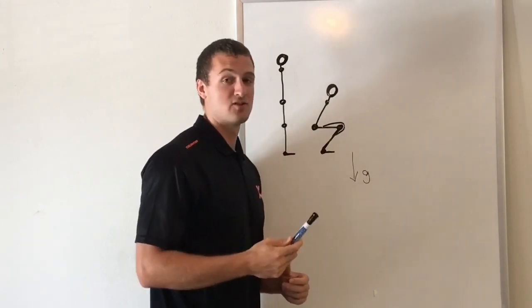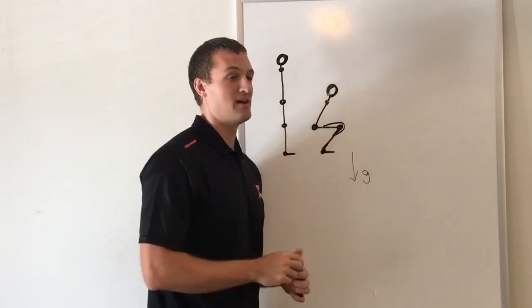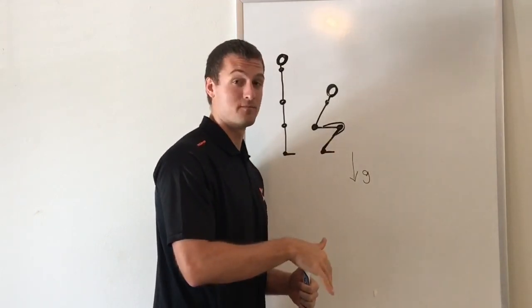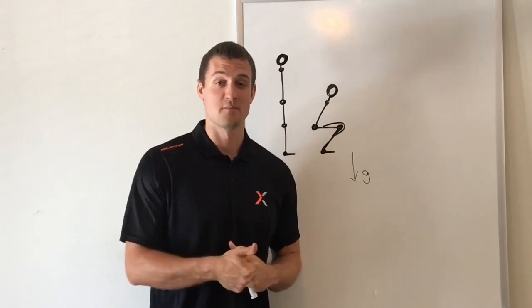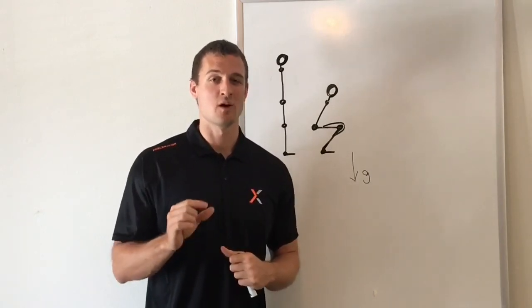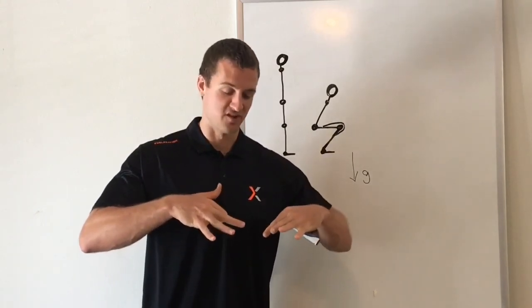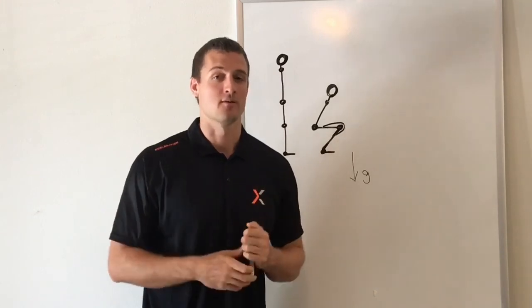And that's actually a contributor to the sticking point in a squat, which happens a little bit above parallel, is a point where the quads have a poor angle of pull. So we have changing length of the muscle, changing angle of pull, and then there's even some more subtle, smaller factors like change in the orientation of muscle fibers relative to the angle of pull.